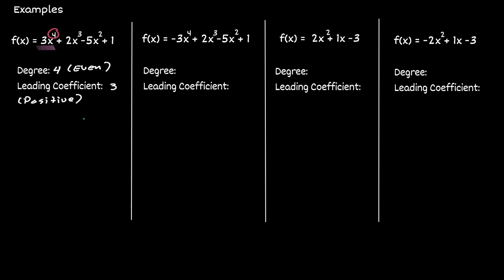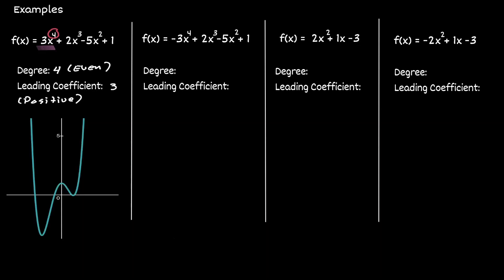If we were to graph this polynomial, this is how it would look. Now let's analyze the next polynomial — let's concentrate on the leading term. The degree of this polynomial is also of degree four, which is an even number. And now the leading coefficient is negative three, which is a negative value. If we were to graph this polynomial, this is how it would look.